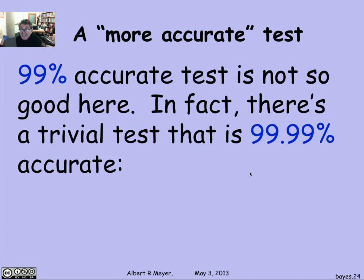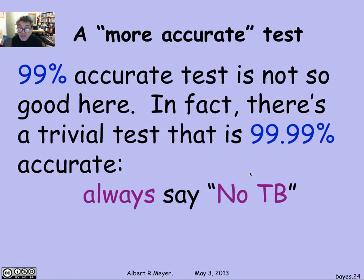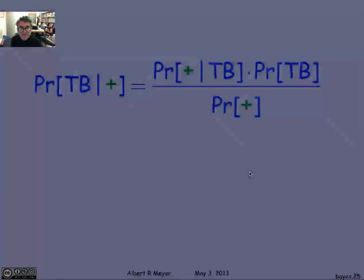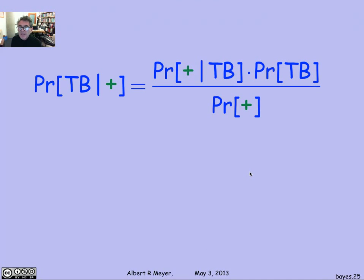The 99% test sounds good, but we figured out that it isn't. A hint about why 99% accurate isn't really so useful is that there's an obvious test that's 99.99% accurate. What is that test? Always say no. After all, the probability is only 1 in 10,000 that you're going to be wrong — that's the 99.99% rate. So it sounds as though this test is really worthless — but no, it's not. If you think about it a little bit, it will be useful.